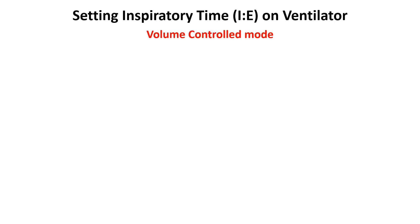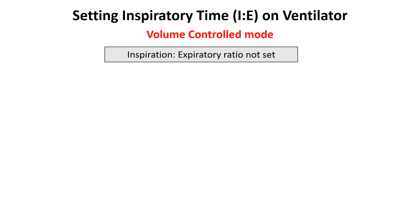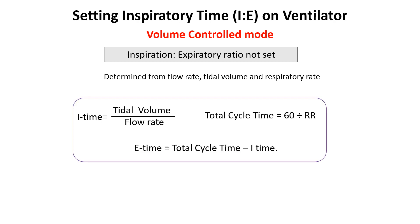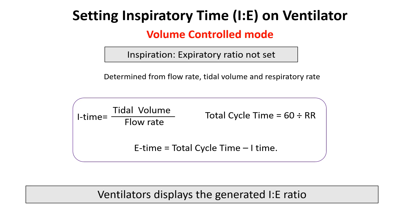In volume-controlled ventilation, we typically don't set the IE ratio directly. Instead, the IE ratio is determined indirectly by adjusting tidal volume, flow rate, and respiratory rate. Since inspiratory time is determined by tidal volume and flow rate, the expiratory time is calculated based on the total cycle time. While volume control ventilation does not allow direct IE ratio setting, you can adjust flow rate, tidal volume, or respiratory rate to achieve the desired ratio. Some modern ventilators may display the IE ratio as a guide when adjusting these settings.